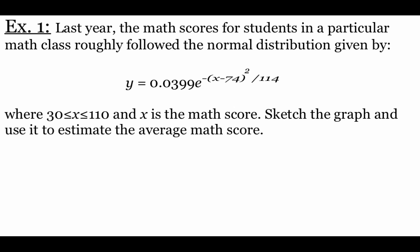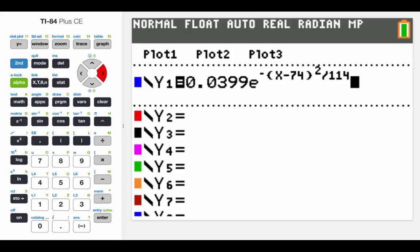In our first example, we're looking at some math scores for students in a math class, and it roughly follows normal distribution given to us by y equals 0.0399e to the power of negative x minus 74 squared, all divided by 14. We're going to sketch out a graph. Actually, I'm going to use my calculator to draw the graph, and we're going to use that graph to estimate the average math score. I already have my equation typed into my calculator. We are going to have to change the window, though, to fit our data.